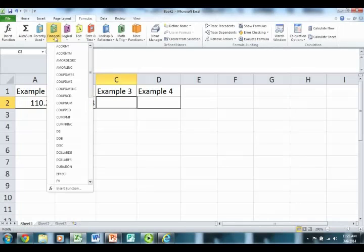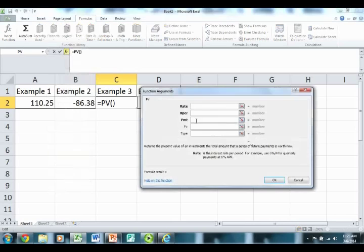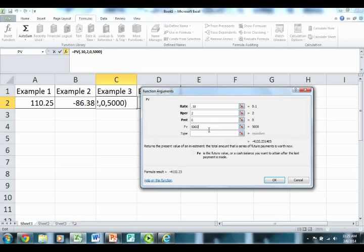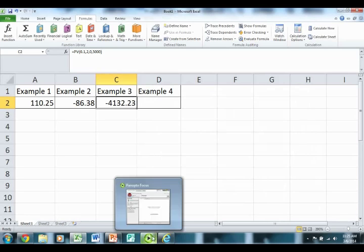Here in example three, we're going to pick present value. We have a rate of 10%, two years, no payments in between, and a future value of $5,000. And that's what we get, $4,132.23 is the present value of that amount.